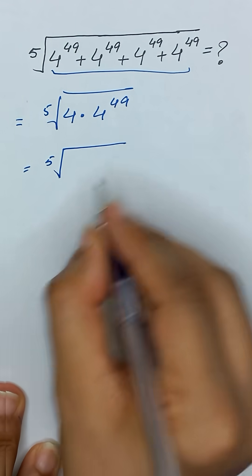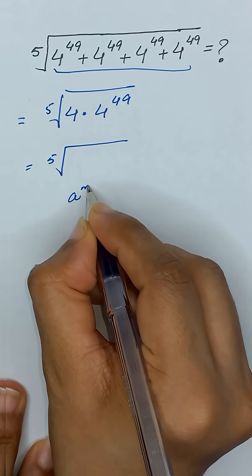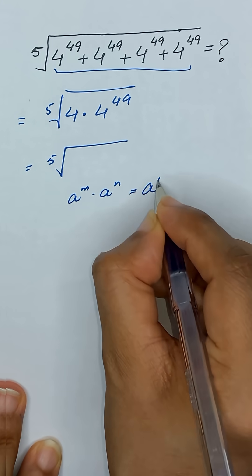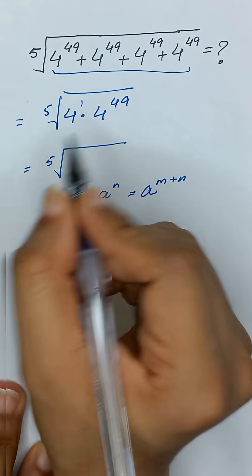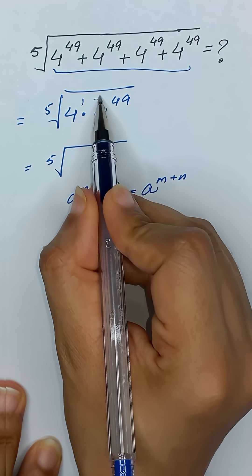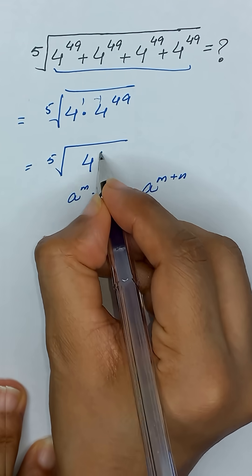Now, we know that a to the power m times a to the power m is equal to a to the power m plus m. So here we have 4, it means it has power 1. So 1 plus 49 will give us 4 to the power 50.